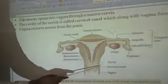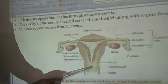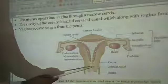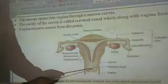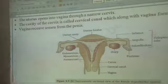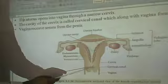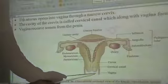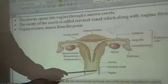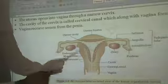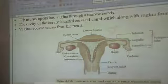The uterus opens into the cervix. The cavity or canal present in the cervix is called the cervical canal. The cervical canal opens into the vagina, which is a muscular semen-receiving chamber. The cervical canal and vagina together form the birth canal.